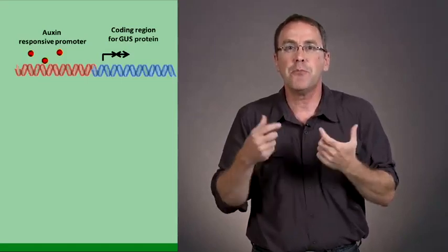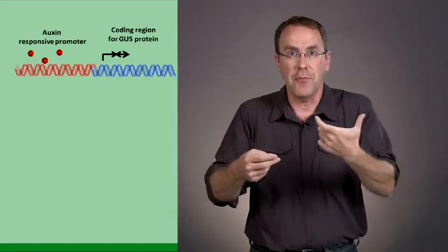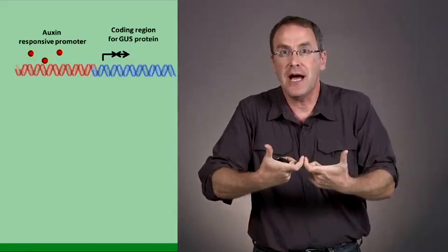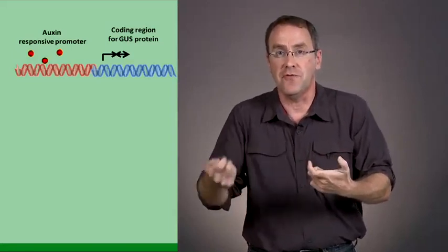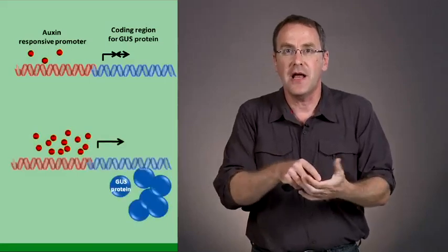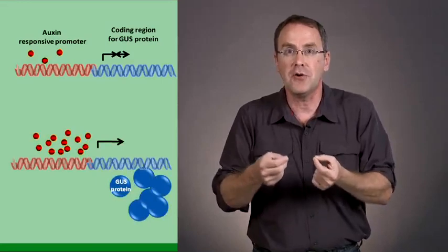This is a reporter gene. Let me go through this slowly. We have a promoter that comes from a gene that's induced by auxin. It's attached to a gene called GUS, which causes a blue color to be formed, such that wherever there's a high concentration of auxin, I can visualize through a microscope a blue color in the roots.